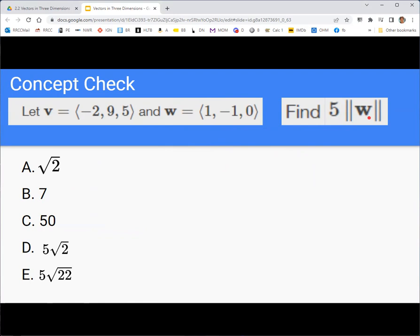Again, if you need some time on these, feel free to pause the recording. The correct answer here is 5 times square root of 2. So you should have found that the magnitude of w is square root of 2. And you just multiply that by 5. So the correct answer is D.